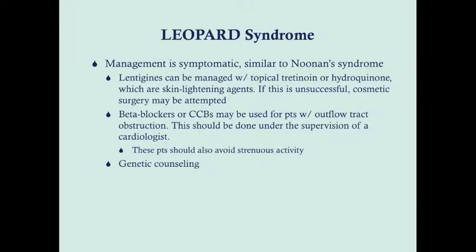Management for Leopard Syndrome is very similar to Noonan Syndrome in that it's symptomatic. The key difference is the lentigines — these are managed with skin lightening agents to make them less noticeable. Topical tretinoin or hydroquinone are useful. If unsuccessful, the patient can be referred to a surgeon for cosmetic surgery. For outflow tract obstruction found on echocardiogram, you can use beta blockers or calcium channel blockers, of course under the supervision of a cardiologist.